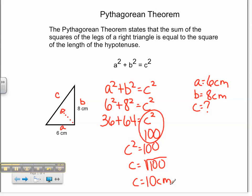So 6 squared is 36, 8 squared is 64, and 10 squared is 100. 36 plus 64 equals 100. Therefore, I solved that one correctly.